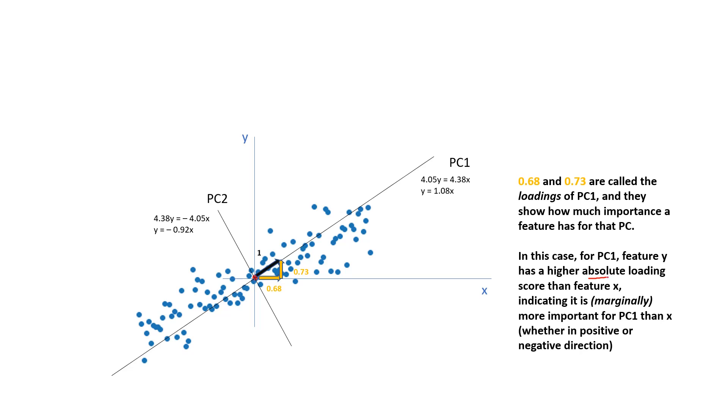We are looking at the higher absolute number. For example, if this was minus 0.73, then that would have meant that this particular feature has a negative correlation with the principal component. And even then, this was a stronger correlation than the feature x. Even though this is negative, we are looking at the absolute numbers.